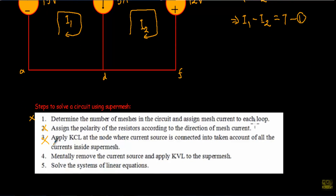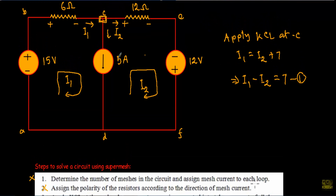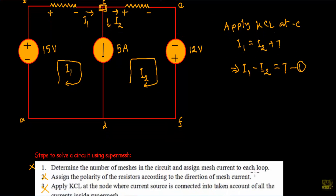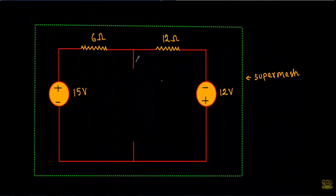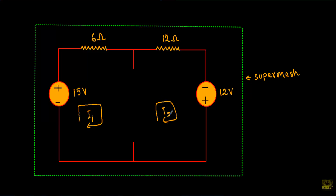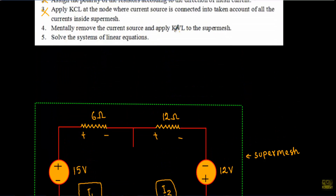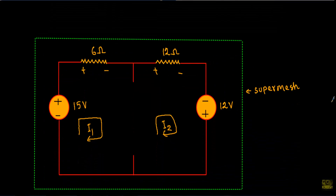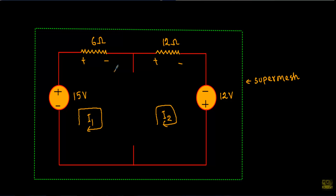Step four: mentally remove the current source and apply KVL to the super mesh. If I remove the 5 A current source, the circuit opens that branch and meshes one and two merge. The region inside the broken line is our super mesh, with loop current I1 in mesh one and loop current I2 in mesh two. Now I will apply KVL to the super mesh.